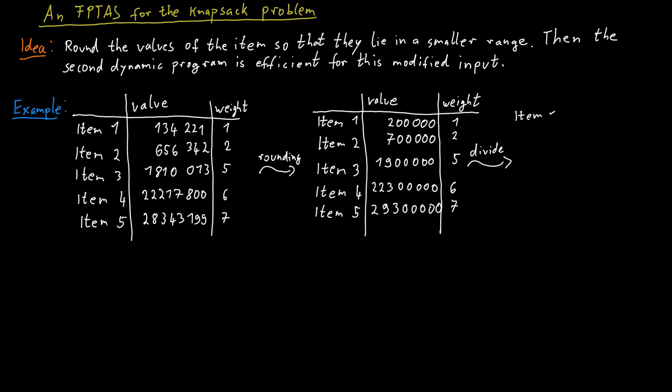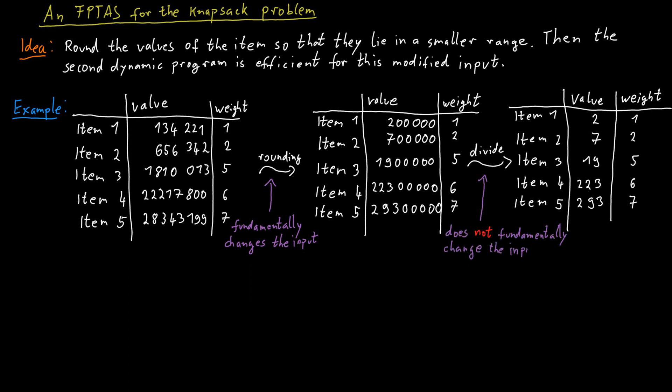So we are dividing all those rounded up values by 100,000. And in this way, we get a much smaller set of values. The rounding up has changed our input instance in a somewhat fundamental way. Solutions that were optimal before might not be optimal anymore. But the second step has not fundamentally changed our input instance. The solutions that were optimal before are optimal after that step and vice versa.